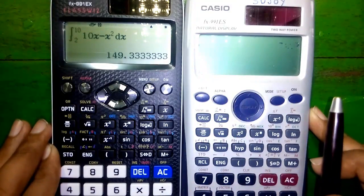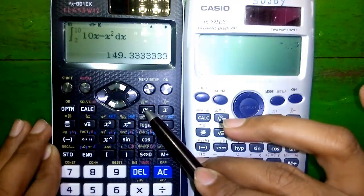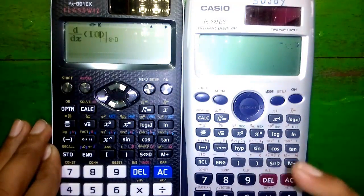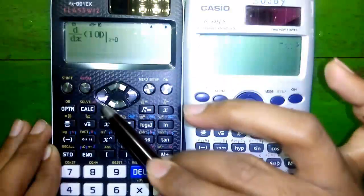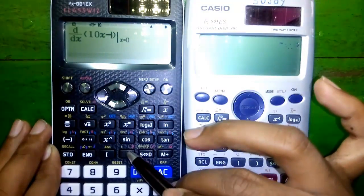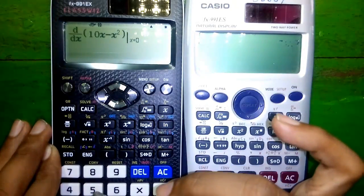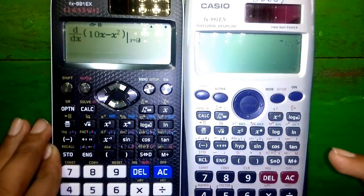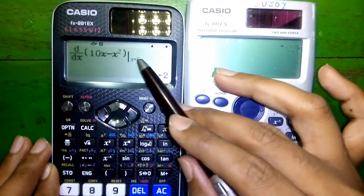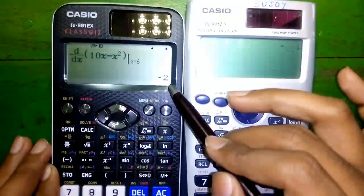Feature number 10: differentiation. Press shift and the integration button to get the differential operator. Enter 10X minus X squared, at X equals to 6. Press equals to — the derivative of this function at X equals to 6 is minus 2.